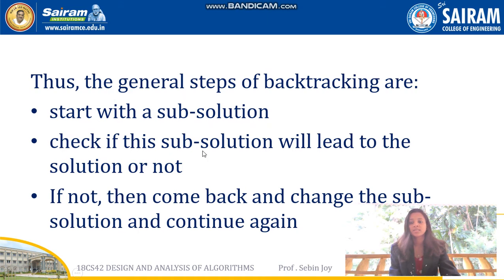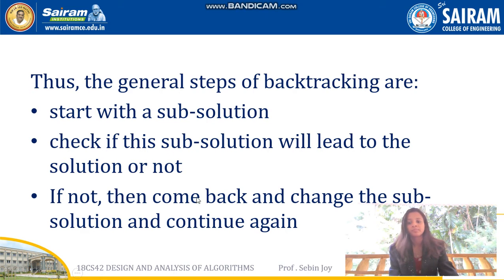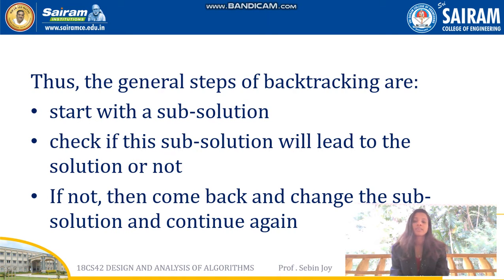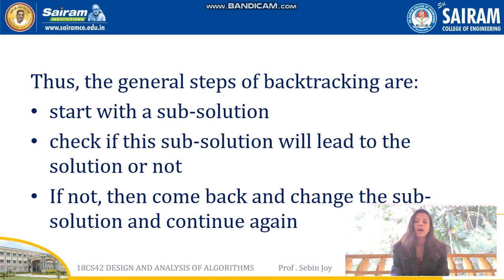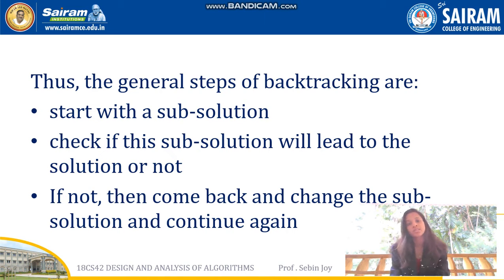There are three steps in backtracking: first, start with a sub-solution; second, check whether this sub-solution leads to the solution; if not, come back, change the sub-solution, and continue again. This is essentially a trial-and-error method — we take the first input, check whether it leads to a possible solution, and if so, add the next input. If we reach a dead end, we go back to the previous step and continue.